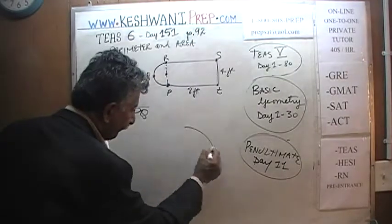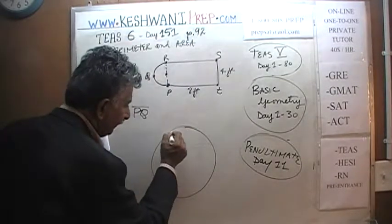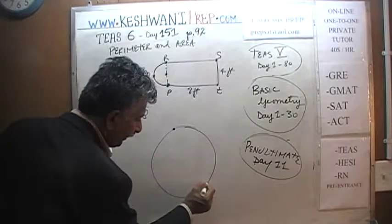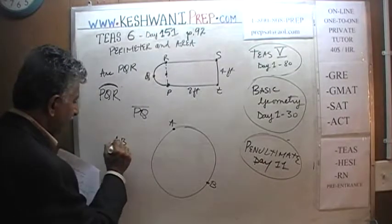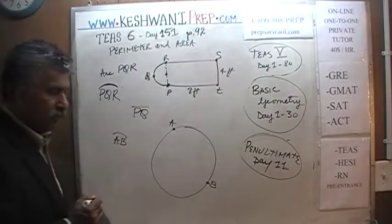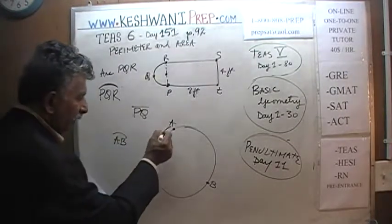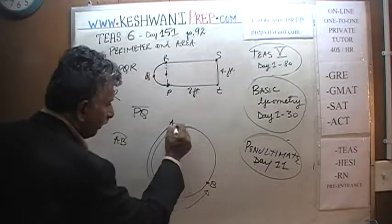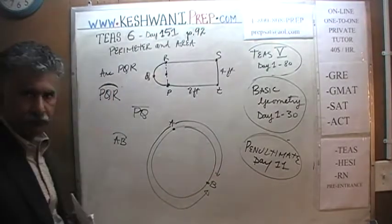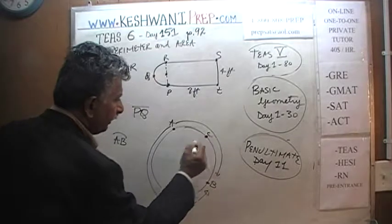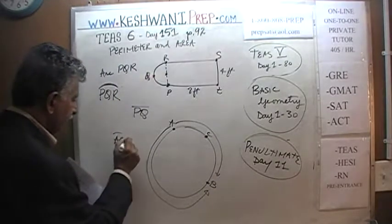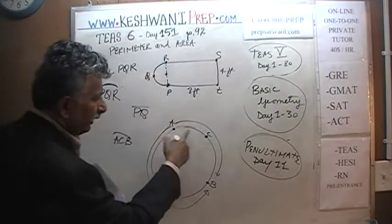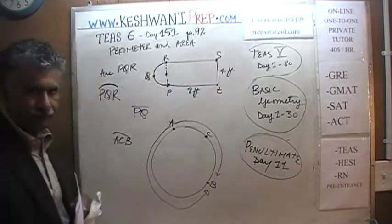For example, if I put here A, B, and if I simply say arc AB, well you don't know which arc I am talking about. Am I talking about this arc or am I talking about this way? So they might put another point in the middle here to tell you arc ACB. Now you know that you have to go ACB, you have to go this way. Do you understand?